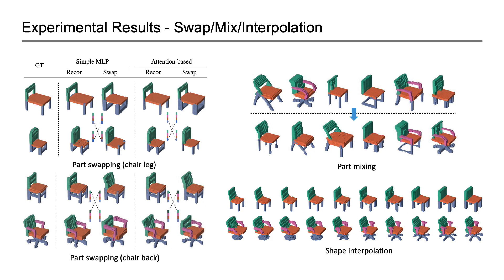By swapping shape parts in the latent space, our method can successfully resize and align it with other parts. Similar results can be observed when using random parts from a certain shape category to compose new shapes.